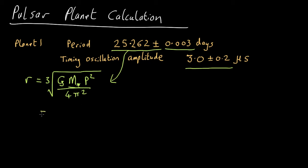And that comes out with 2.8 by 10 to the 10 meters, which is about 0.19 astronomical units. So far closer than Mercury in our own solar system.